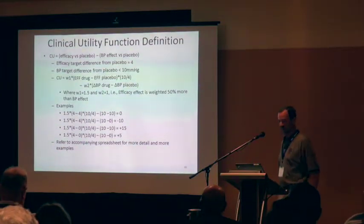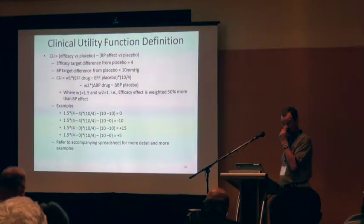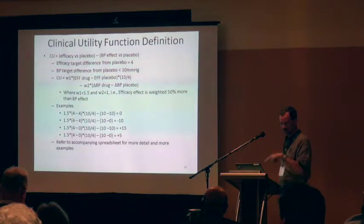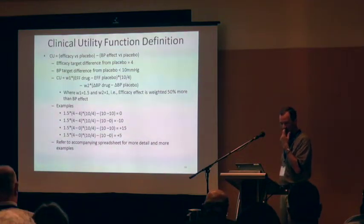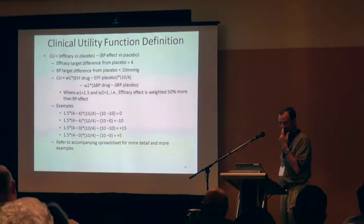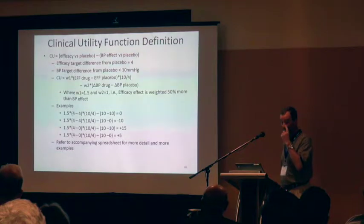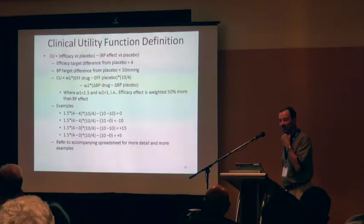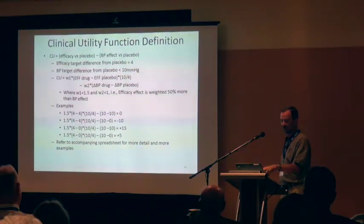The efficacy target difference from placebo is four units. The blood pressure target difference from placebo is to have it less than ten. In combining the clinical utility, we multiply the efficacy response by ten and divide by four in order to scale it similarly to blood pressure. The clinician said he wanted to weight efficacy 50 percent more than tolerability, so we applied that weighting to yield these example clinical utility values.